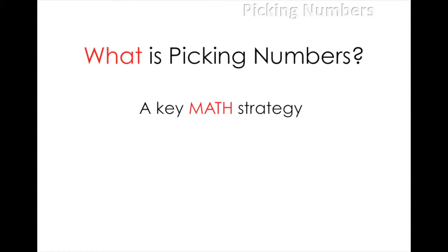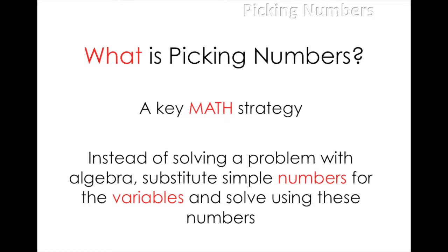Picking numbers is a key strategy to use on the math sections of the SAT and ACT. Instead of wasting brainpower trying to work out complicated algebra, substitute simple numbers for the variables found in the problem and solve using these numbers. This will cut out hard-to-catch algebraic mistakes and save time in the long run.